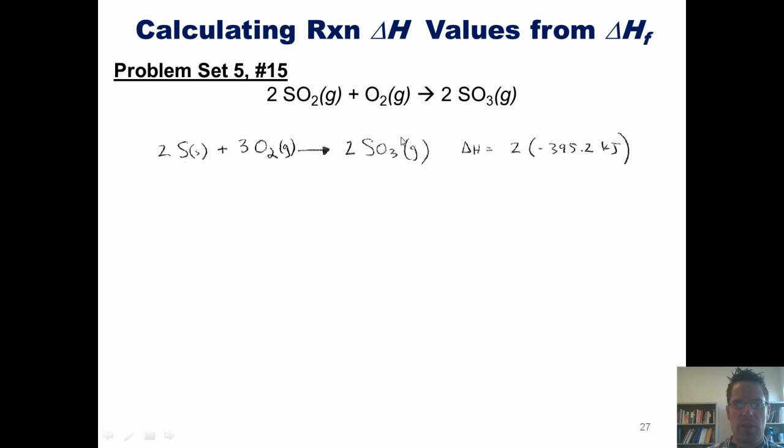Beginning with SO3 shown on the product side, looking in Appendix C, when SO3 is formed from its parent elements sulfur and O2, it gives us an overall delta H of formation of negative 395.2 kJ. Keeping in mind there's a 2 in front of our SO3 in the balanced equation, we multiply all the coefficients by 2, giving us this overall chemical reaction.